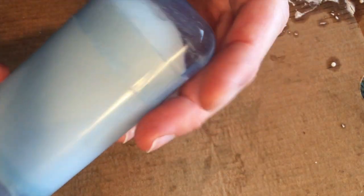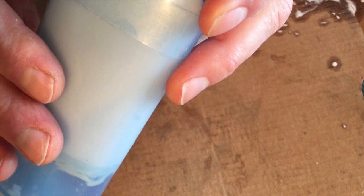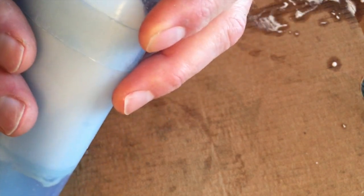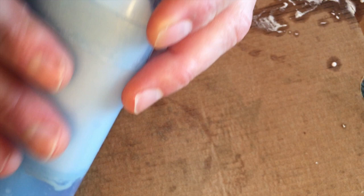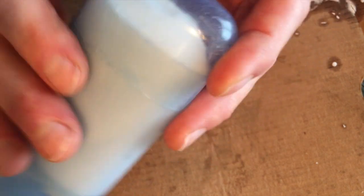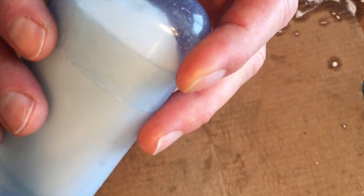In fact, you need to keep this in the refrigerator. Coconut oil melts at 76 degrees, and you want to keep it below that. Just keep it refrigerated all the time.